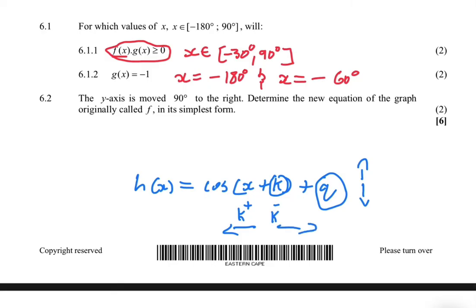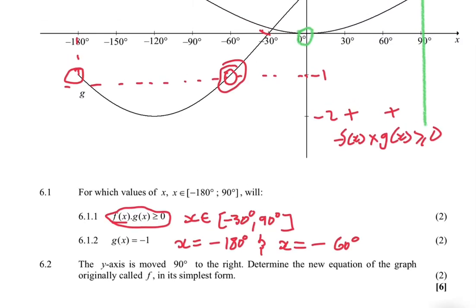If k is positive, you move your graph to the left. If k is negative, you move your graph to the right. So we're moving the y-axis to the right, which means we're moving along the x-axis to the left.